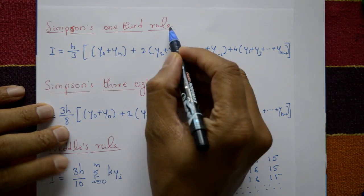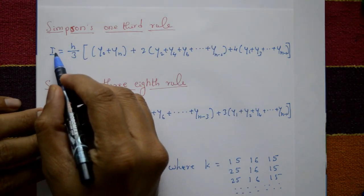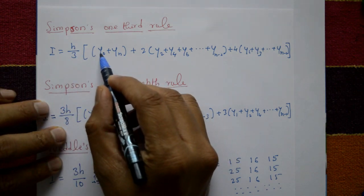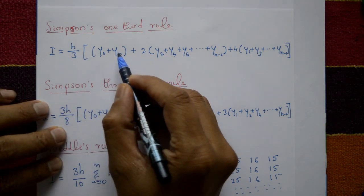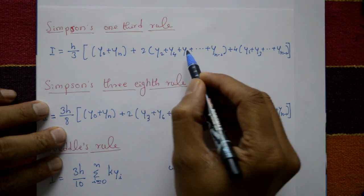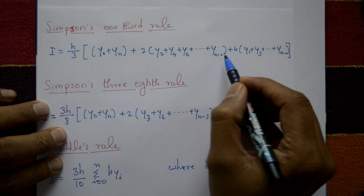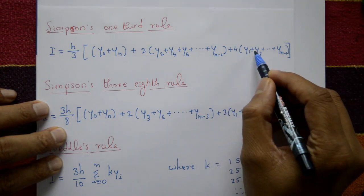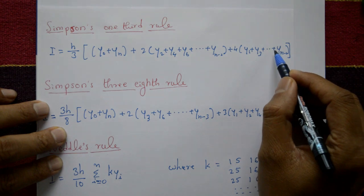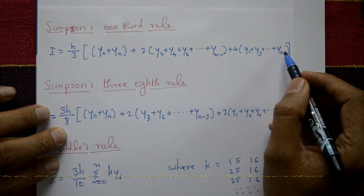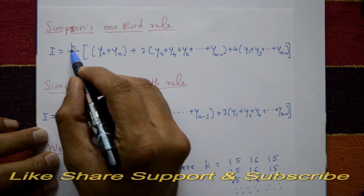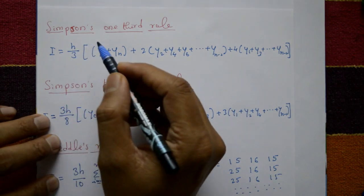Simpson's one-third rule: integration I is equal to h by 3 into y-naught plus y-n plus 2 into (y2 plus y4 plus y6 plus ... plus y(n-2)) plus 4 into (y1 plus y3 plus y5 plus ... plus y(n-1)).